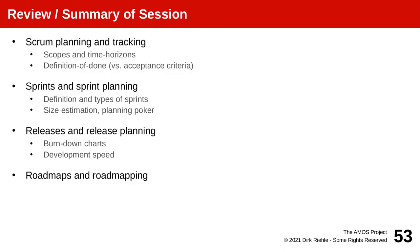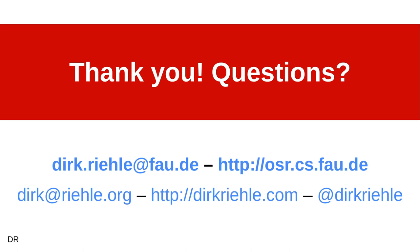So we talked about planning and tracking in Scrum, tied to different scopes and time horizons and organizational scopes, and the different activities. We introduced definition of done — not to be confused with acceptance criteria — and reviewed some of the key activities. We went from sprint planning through release planning to road mapping. This concludes the second section of the fourth part. After this, we'll move on to software development, engineering management, and software development topics. Thank you for your time and attention, and see you in the next lectures.